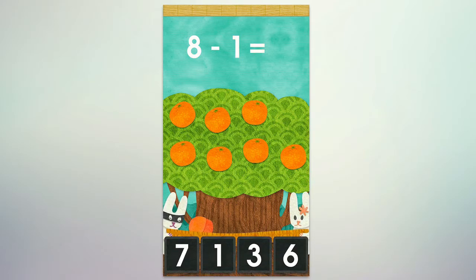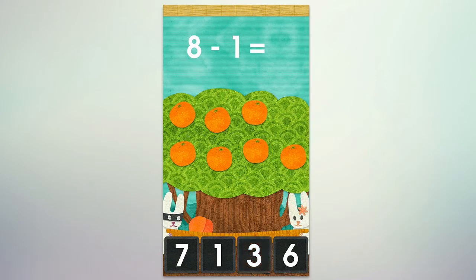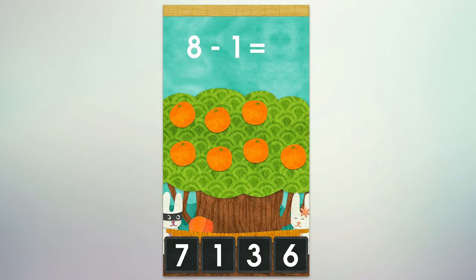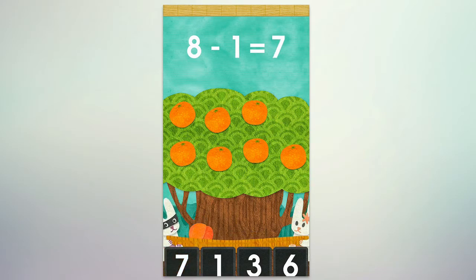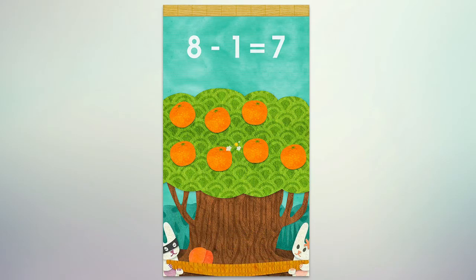If I get it wrong — let's say the correct answer is 7 but I say 3, for example — it'll tell me it's too few. It'll tell me if it's too few or too much. So now I know I can click 7, and it'll tell me I'm correct.